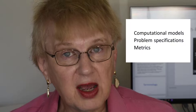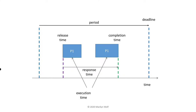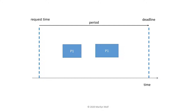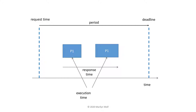Let's start with some terminology on models of computation, on problem definition, and on metrics. Here's an execution of a process. The request time is the first time at which the process is allowed to execute. It has to finish by its deadline. If the task executes periodically, we refer to this as the period. The execution time may be split up among several different separate executions. The response time is the time from when the process is first released to when it completes.